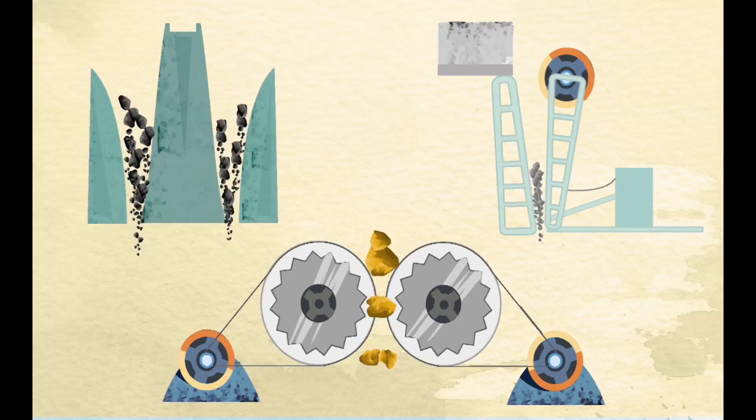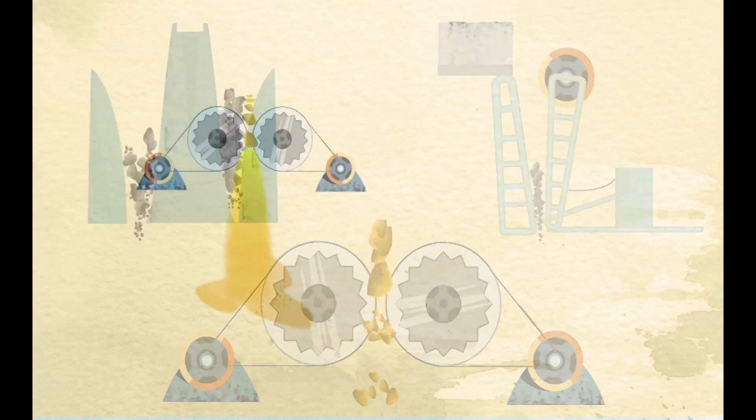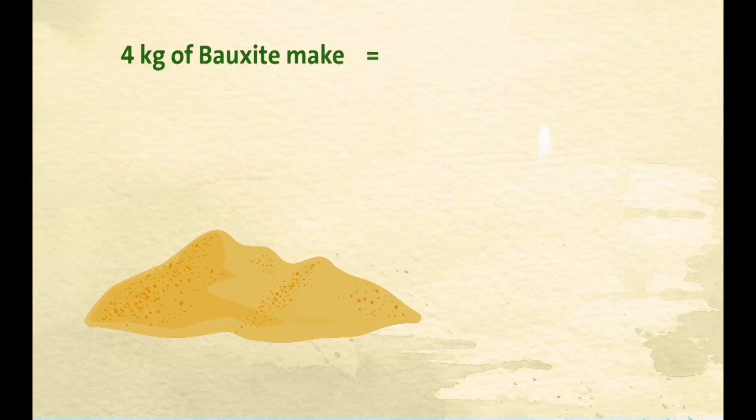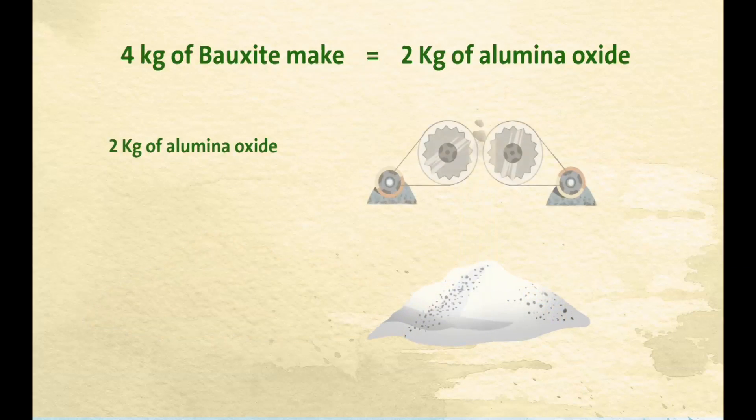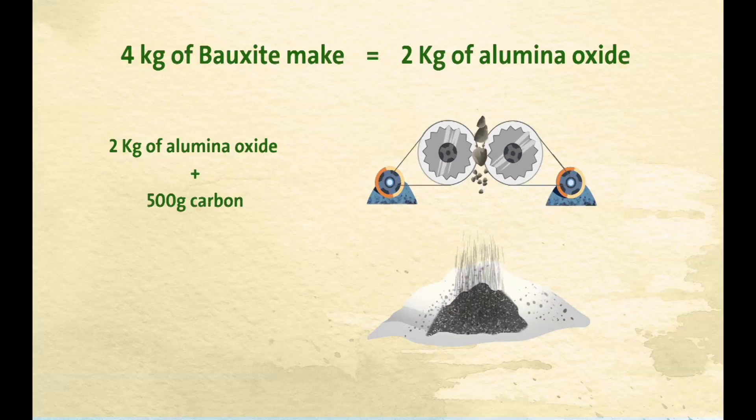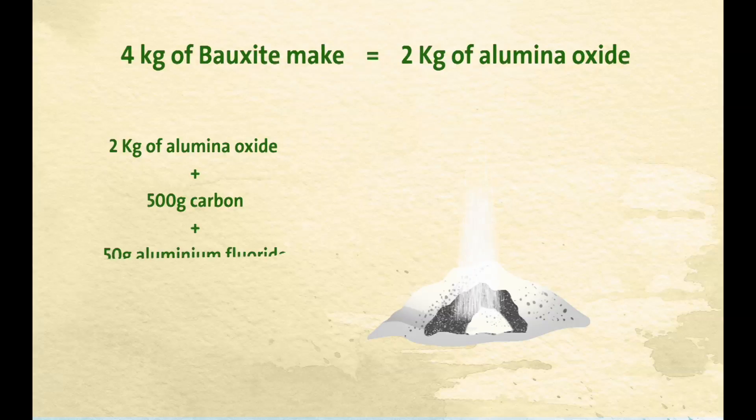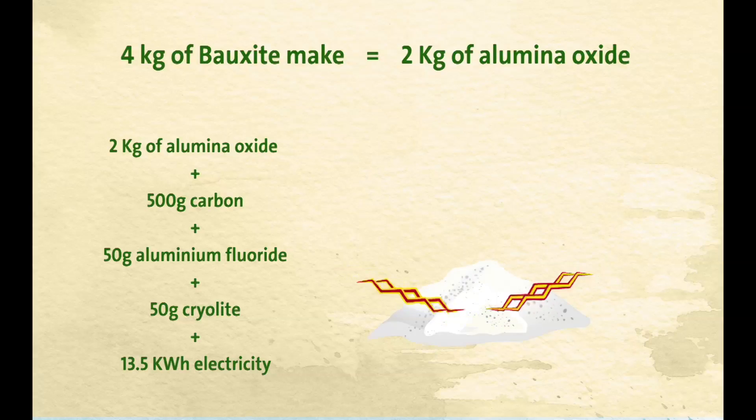The production of 1 kg of aluminium requires 4 kg of bauxite to make 2 kg of alumina oxide. 2 kg of alumina oxide plus 500 g carbon plus 50 g aluminium fluoride plus 50 g cryolite plus 13.5 kW of electricity equals 1 kg of 99.7% pure aluminium.